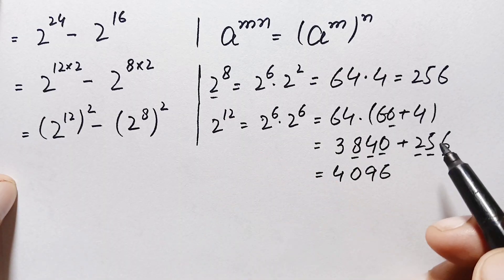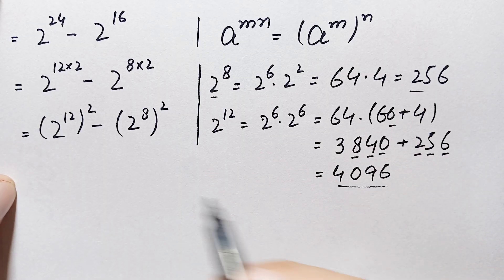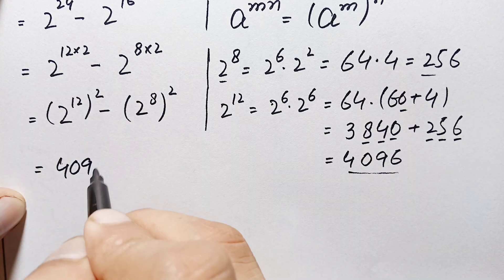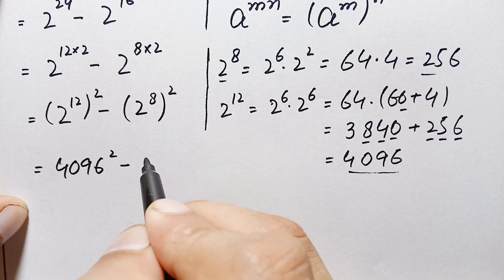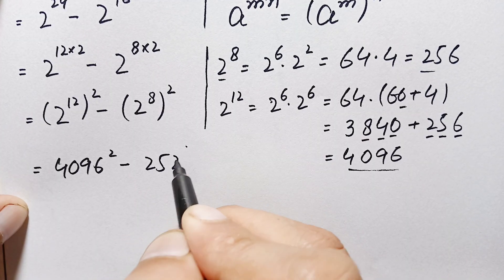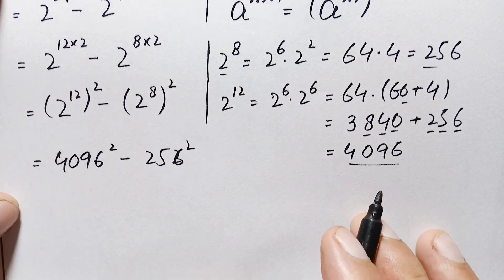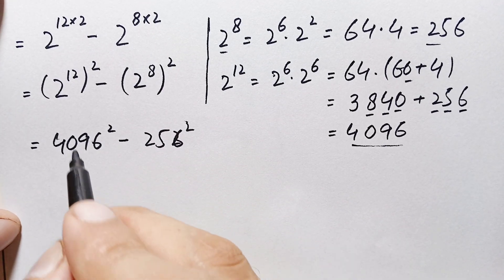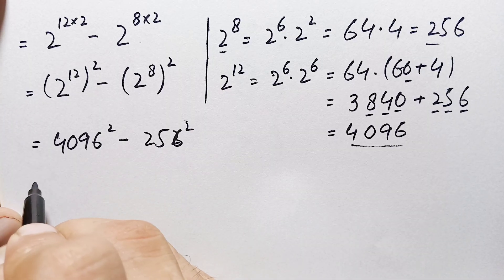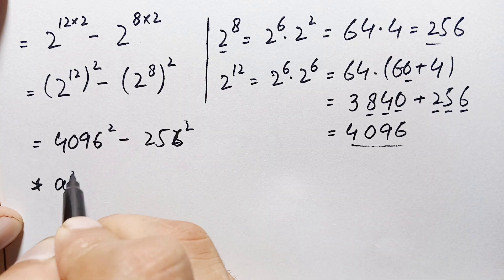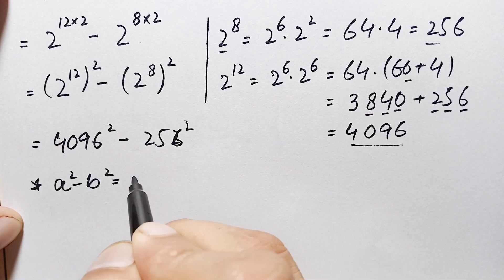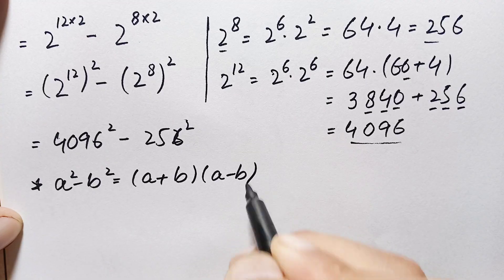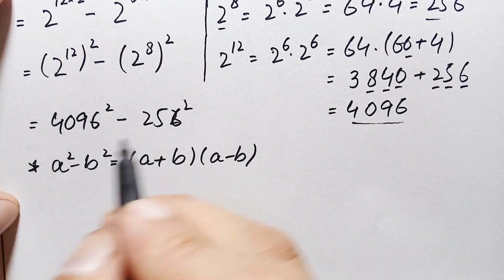We now replace these two values: 2 raised to power 12 is 4096 and 2 raised to power 8 is 256. So the expression becomes 4096 squared minus 256 squared. This matches the algebraic identity a squared minus b squared, which equals a plus b times a minus b.